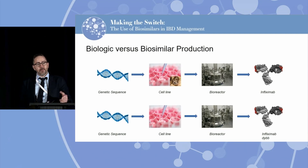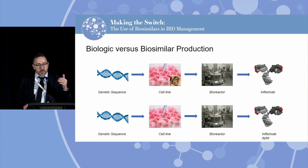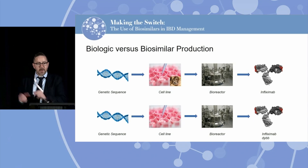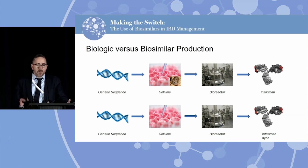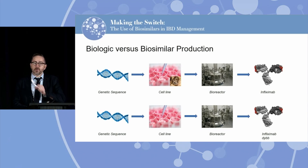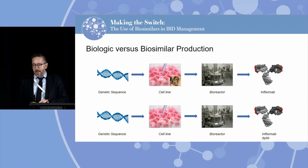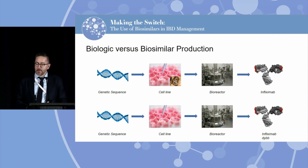When comparing biosimilar to originator, say Remicade or infliximab, you take a sequence, put it in a cell line — usually very similar cell lines are used — and use a bioreactor to produce a biosimilar version. How these are named: the original infliximab is on top; the biosimilar then gets a four-letter sequence at the end to identify it as a biosimilar version. These letters mean nothing — it's just a random code — but each biosimilar version of infliximab will have a unique four-letter sequence, so you know this is biosimilar X, Y, or Z of infliximab.